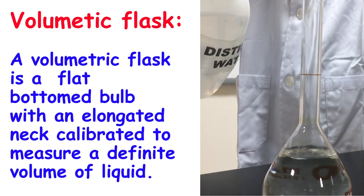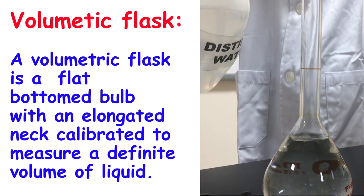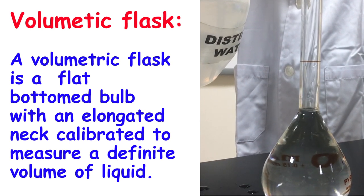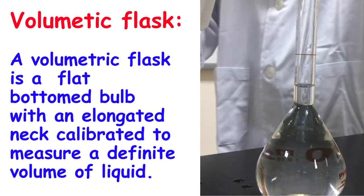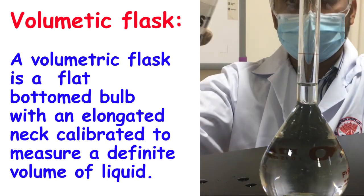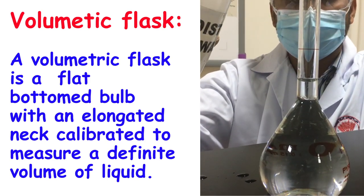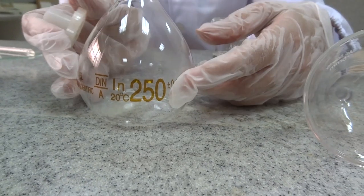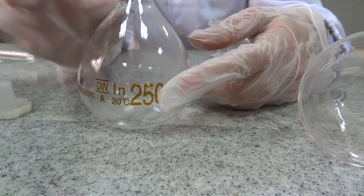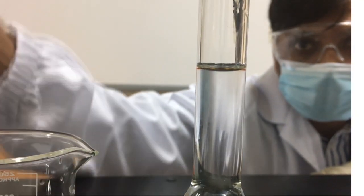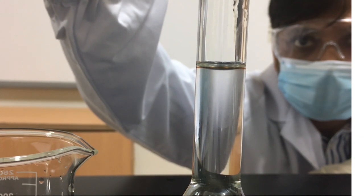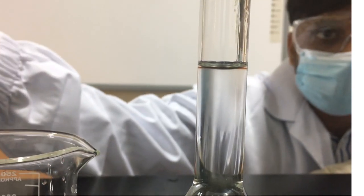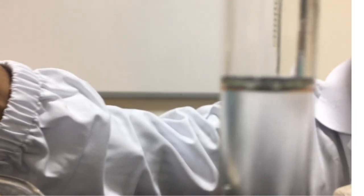A volumetric flask is a flat bottomed bulb with an elongated neck calibrated to measure a definite volume of liquid. Volumetric flasks come in different volumes. In front of me, a volumetric flask of 250 milliliters. When the liquid reaches the calibration mark, this means that we reach an exact volume of 250 milliliters.